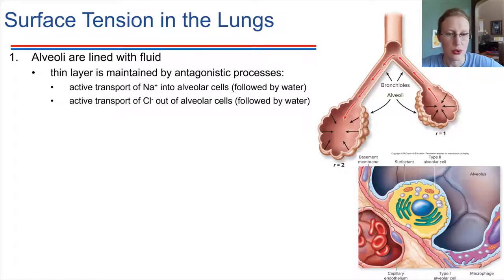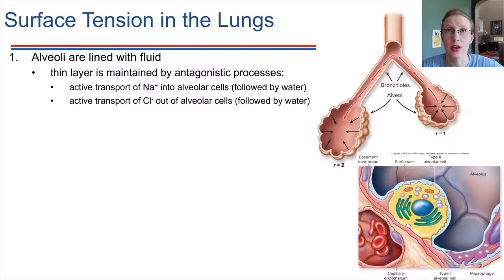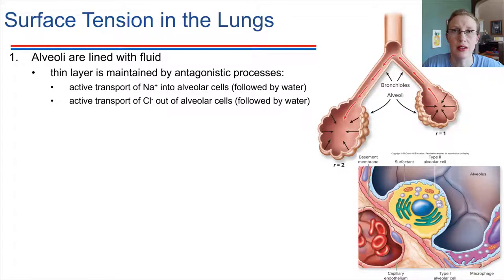If they need to reduce how much fluid is in the alveoli, what they do is take up some of the sodium ions from their surroundings. Through active transport — using some energy — they take in a sodium ion, and then water follows the sodium, following the rules of osmosis and diffusion. So that causes a decrease in how much fluid there is inside the alveoli, because the water has moved into the cell instead.